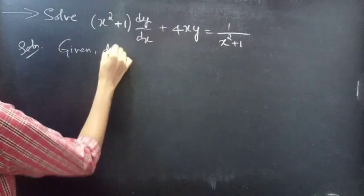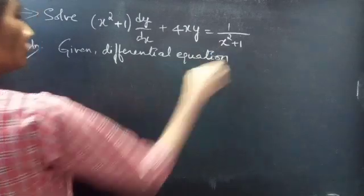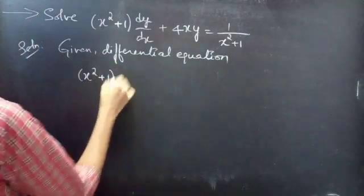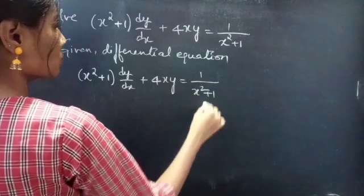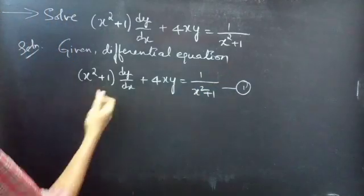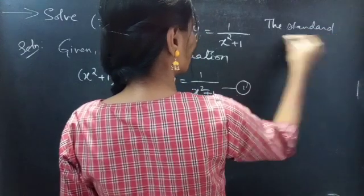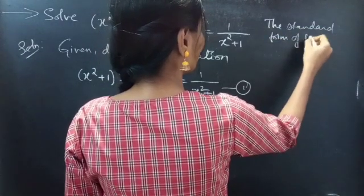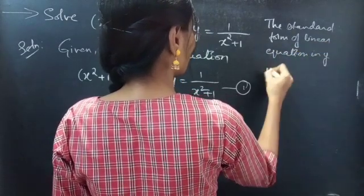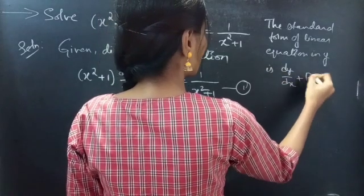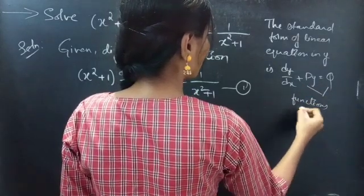Given differential equation: (x² + 1) dy/dx + 4xy = 1/(x² + 1). That is equation 1. Now we have to reduce this to standard form of linear equation. We know that the standard form of linear equation in y is dy/dx + P·y = Q, where P and Q are functions of x alone.